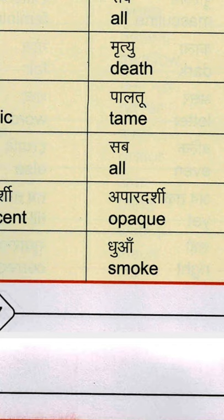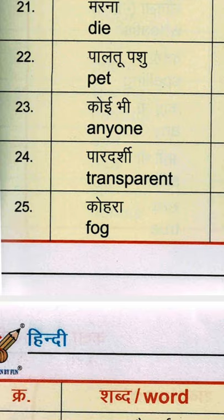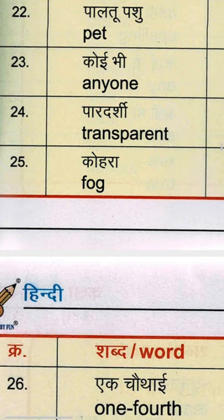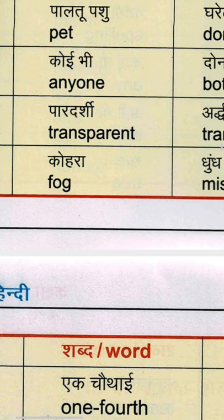कोई भी — anyone — A-N-Y-O-N-E. दोनों — both — B-O-T-H, both means दोनों. सब — all — A-L-L. पारदर्शी यानि transparent — T-R-A-N-S-P-A-R-E-N-T — जिसके आर-पार देखा जा सके। जैसे simple कांच होता है जिसके आर-पार हम देख सकते हैं — वो होता है transparent।